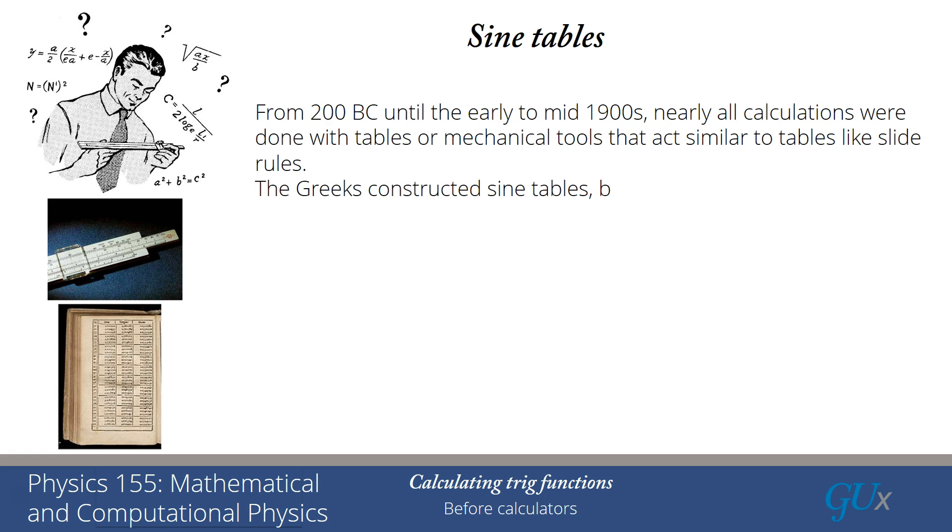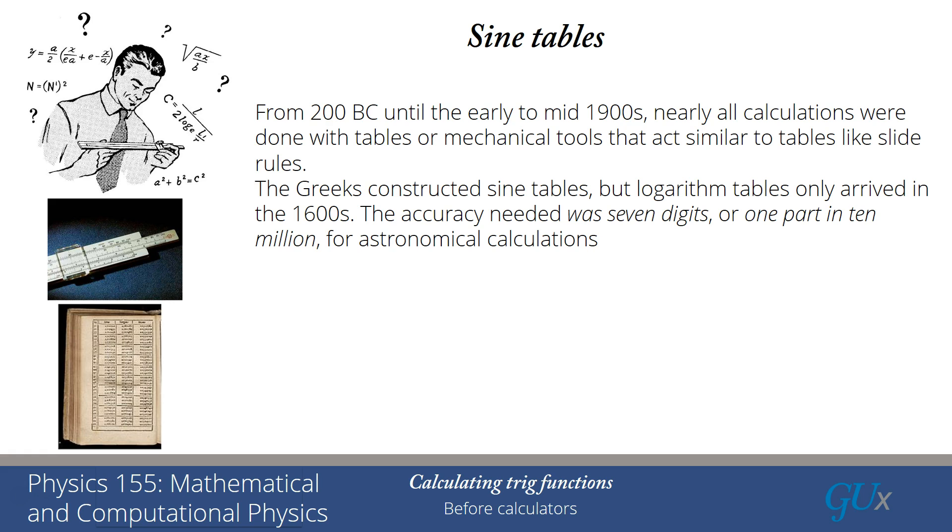The Greeks constructed Sine Tables, but logarithm tables only arrived in the 1600s. The accuracy that was needed for these tables was 7 digits or 1 part in 10 million for astronomical calculations.